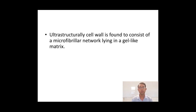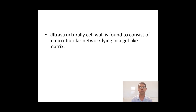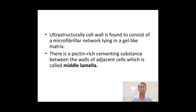When we look at the ultrastructure — the detailed structure — of the cell wall, it is found to consist of a microfibrillar network lying in a gel-like matrix. There is a pectin-rich cementing substance between the walls of adjacent cells, which is called the middle lamella. In between two cells there is a small gap, and that gap is called the middle lamella.